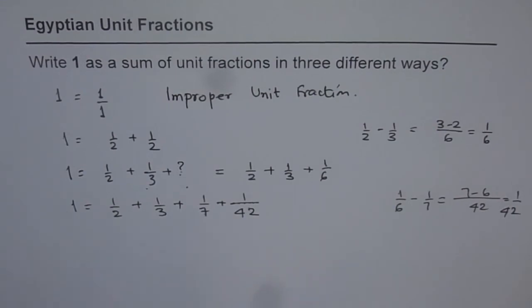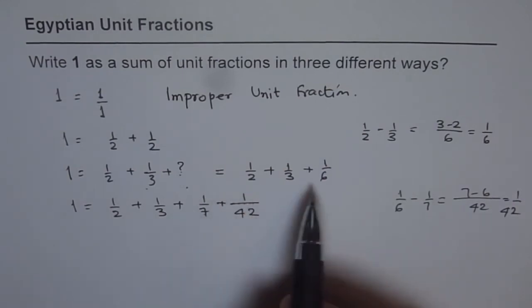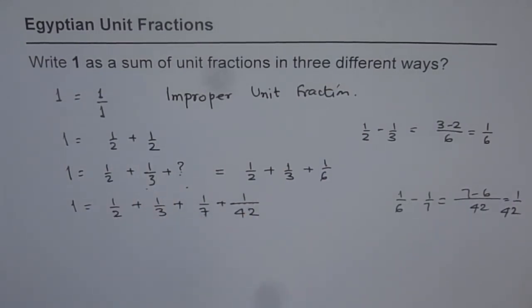If you add this, you should get 1. Now as an exercise, you can add this and check it out whether these are the right ways of writing our Egyptian unit fractions or not. And then, like this, you can expand your series and write 1 as combination of so many unit fractions. In fact, you can go on with this series infinitely.